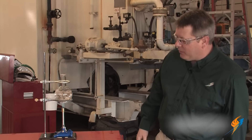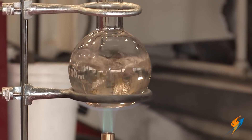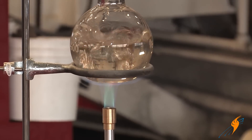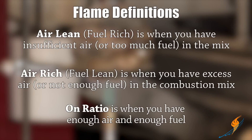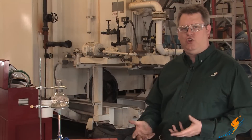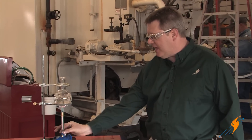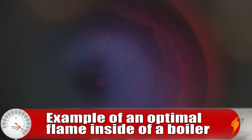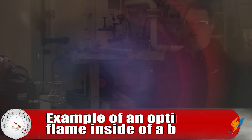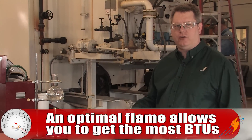What we've got an example of here is a very lean flame because the air aperture on this burner is wide open. What we do when we tune a boiler is use feedback from the stack to adjust that and get the optimal flame. An optimal flame allows you to get the most BTUs out of your cubic foot of gas.